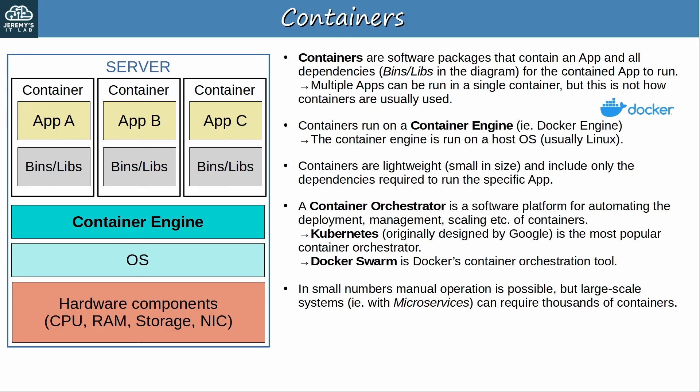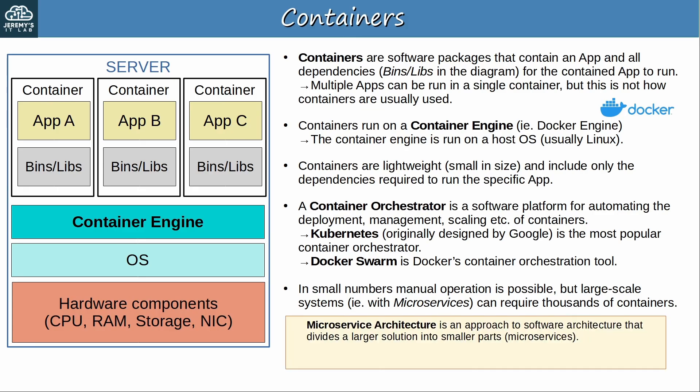Since I mentioned microservices: microservice architecture is an approach to software architecture that divides a larger solution into smaller parts called microservices. So instead of one monolithic app, you might have hundreds of different microservices running together to form the larger solution. And those microservices all run in containers that can be orchestrated by Kubernetes or another platform.